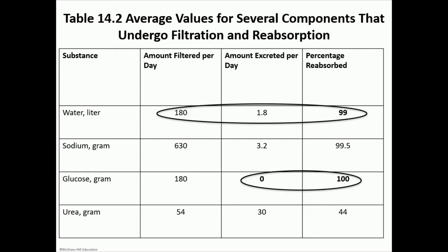Every day the nephrons filter about 180 liters of water — not that we have 180 liters in our body, but the kidneys filter our blood several times a day. We obviously do not make 180 liters of urine; we make about 1.8 liters on average, meaning we reabsorb 99% of that water. All glucose is filtered but not excreted under normal conditions — 100% is reabsorbed. In diabetic patients with hyperglycemia, this system gets overloaded.